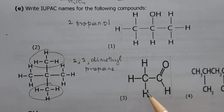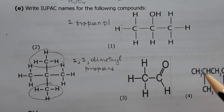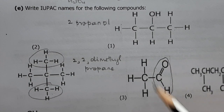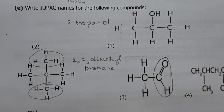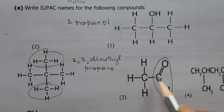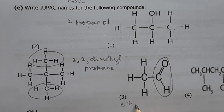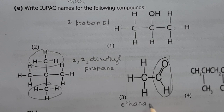(iii) Here you can see the aldehyde group. There are two carbons, so it is 'eth-', giving the IUPAC name ethanal.